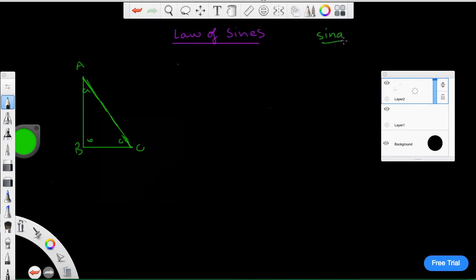Sine A equals BC over, which equals to sine B over CA, and then sine C equals over BA. So that's all it is.